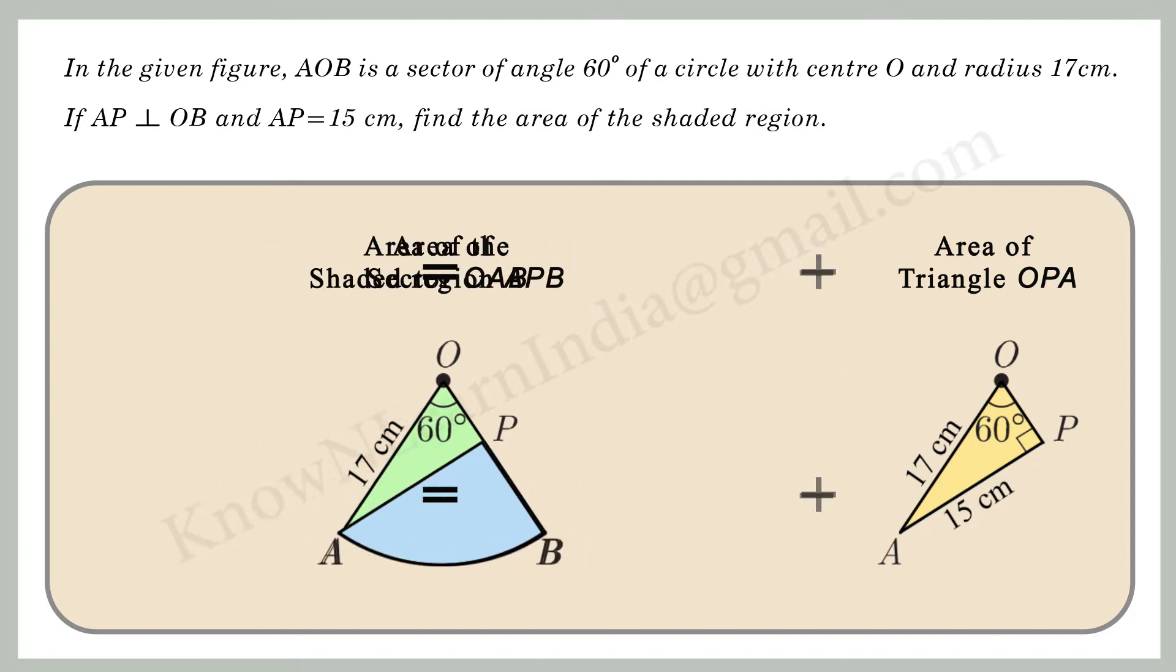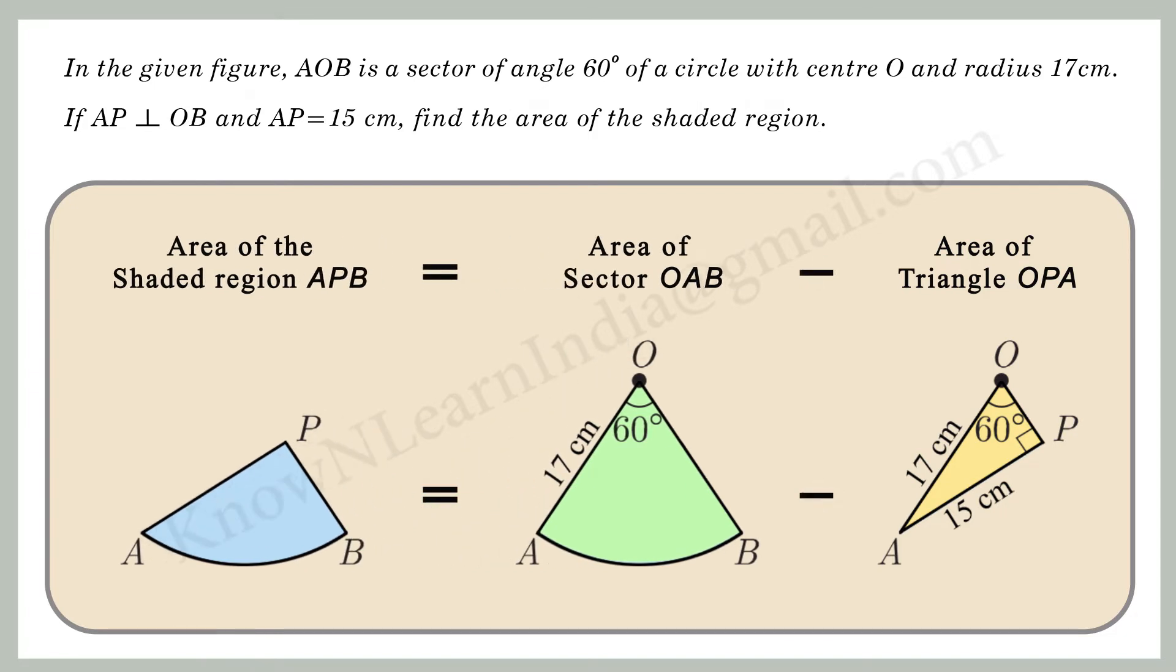We can see that we get the area of the shaded region APB by subtracting the area of the triangle OPA from the area of the sector OAB. That is, area of the shaded region APB equal to area of the sector OAB minus area of the triangle OPA.